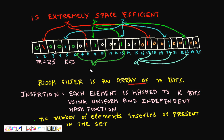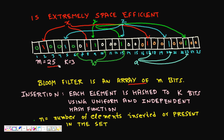A Bloom filter is an array of m bits. In this example, m = 25 bits. We also have k uniform and independent hash functions. During insertion, each element is hashed to k bits using these hash functions. Each hash function gives a value from cell 1 to m. Here n is the number of elements inserted (cardinality of the set) and k is the number of hash functions.